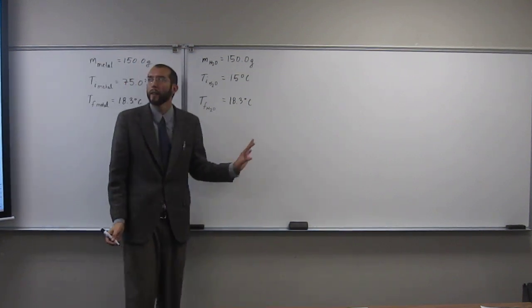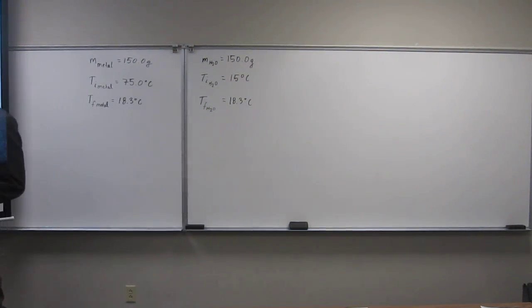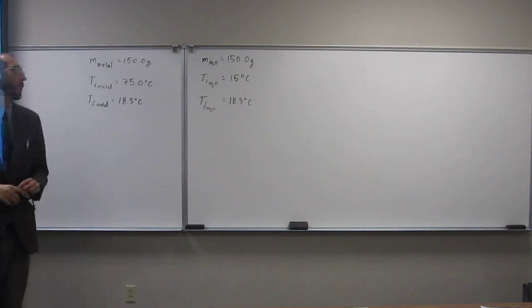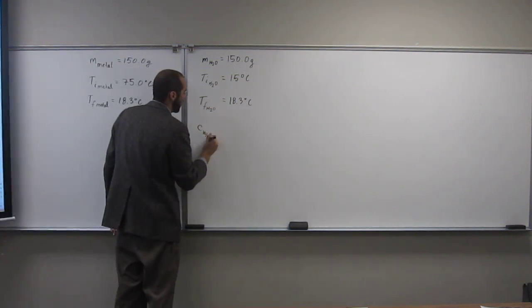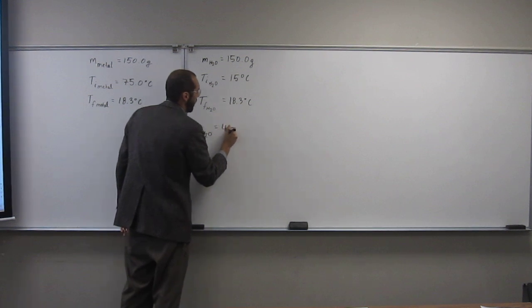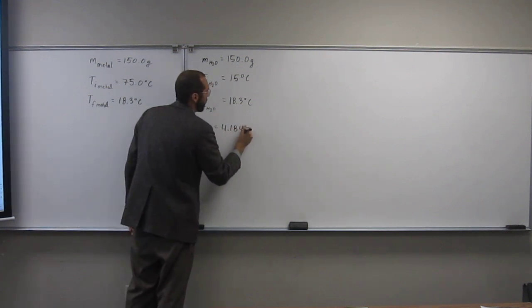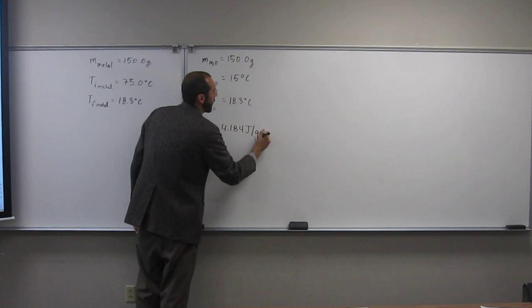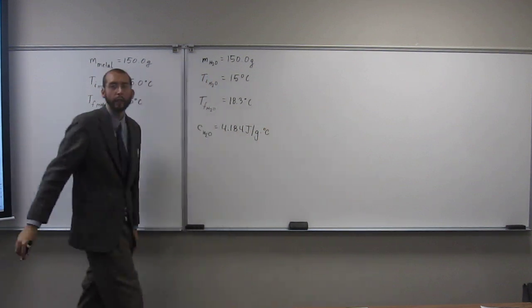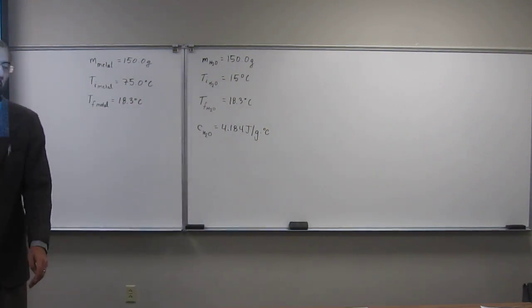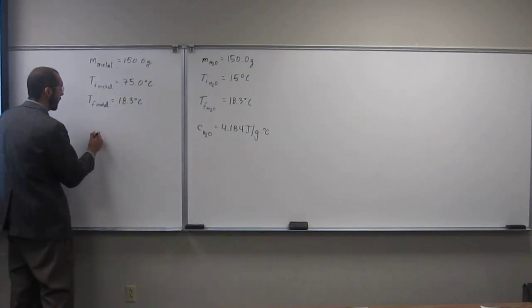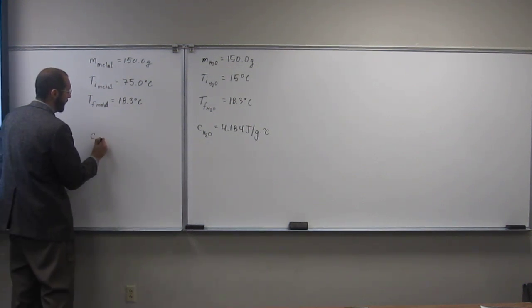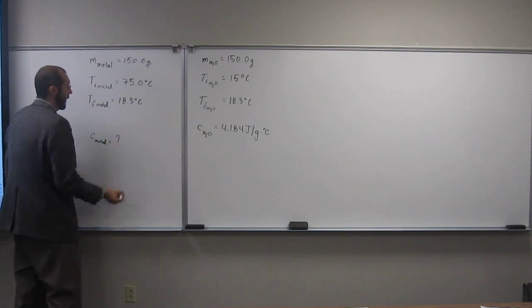The constant they didn't give you in this problem, and it would be at the top of the page, it would be the heat capacity of water, which you need: 4.184 joules per gram degrees Celsius. Like I said, that would be good enough. So you're looking for the heat capacity of the metal. What is that?